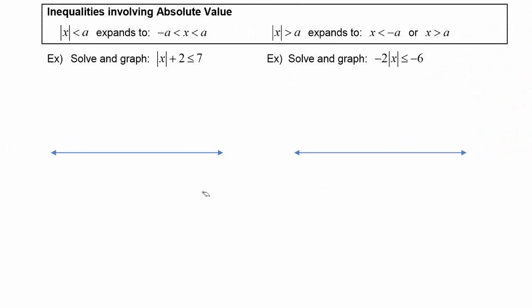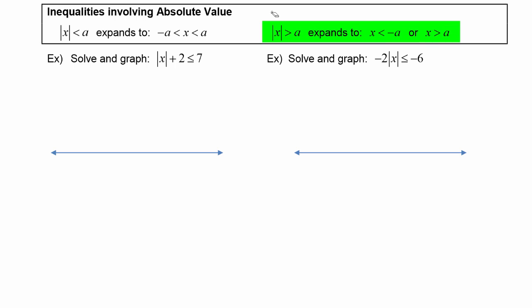Next we'll review working with inequalities involving absolute value. If you have an inequality in the form absolute value of x less than a, that expands to negative a less than x less than a. If you have an inequality in the form absolute value of x greater than a, that expands to two inequalities in an or statement: x is less than negative a, or x is greater than a.